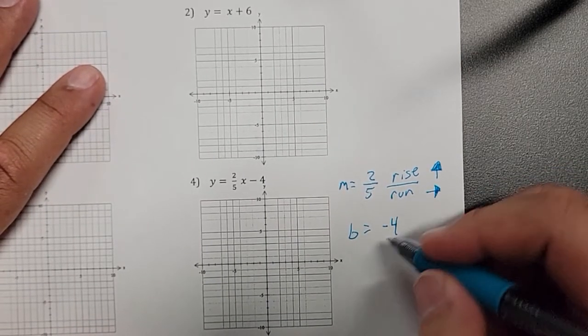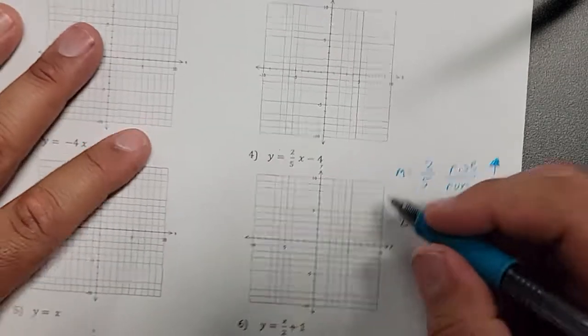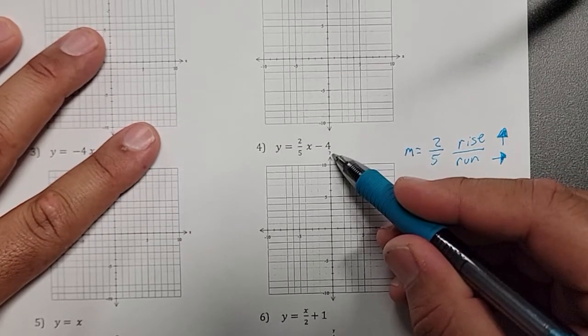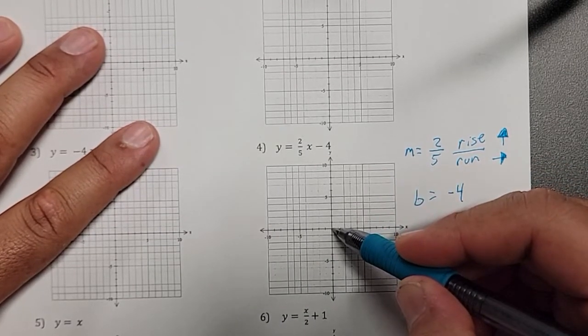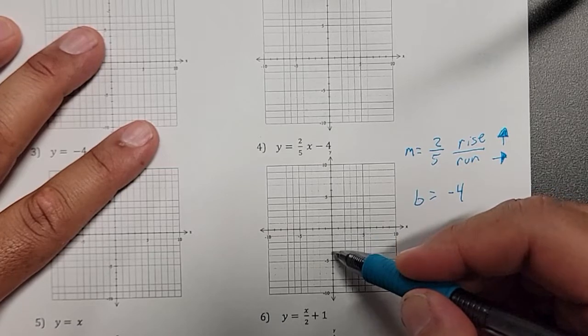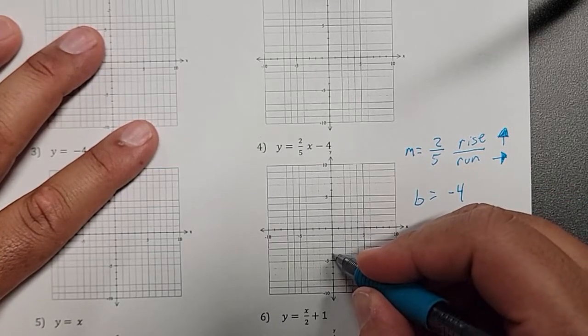So the first thing we need to do is find our y-intercept. So my negative 4 on my y line, here's the y, I'm going to go 4 units down. So 0, 1, 2, 3, 4, and I'm going to put a dot.